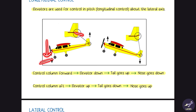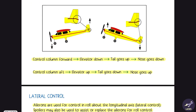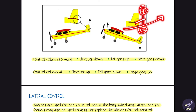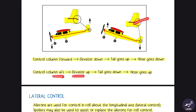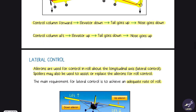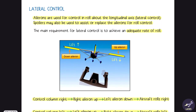When the control column is moved aft, the elevator moves up. Airflow accelerates creating low pressure above and high pressure below the tail, producing a downward force that moves the tail down and the nose up. So moving the control column aft causes the elevator to move up and the aircraft to pitch nose up.